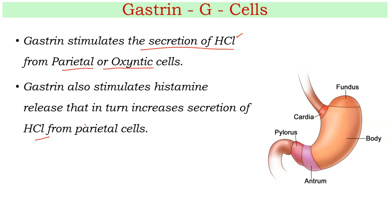Gastrin mainly exists in three forms: one with 34 amino acids, which is cleaved into a smaller 'little gastrin' with 17 amino acids, and 'mini gastrin' with 14 amino acids. Among all these types, the little gastrin with 17 amino acids is the main biologically active hormone, with a half-life of only 5 minutes, during which it activates oxyntic cells to secrete HCl.